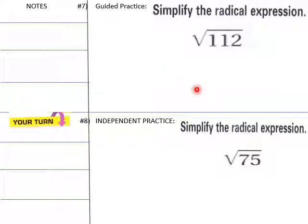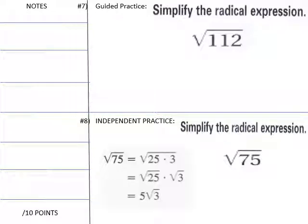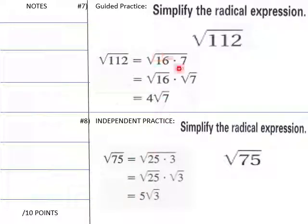Simplifying radical expressions: Is there a perfect square that's a factor of 112? Is there a perfect square that's a factor of 75? For 75, 25 is a perfect square, so 5 times square root of 3. This is not a perfect square, so just leave it unless you want to use your calculator. For your guided practice, 16 times 7. 16 is a perfect square, so it becomes 4 times radical 7.